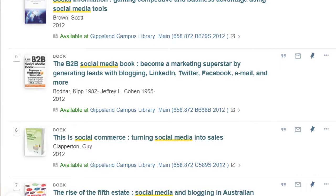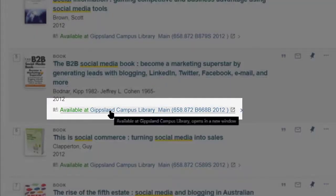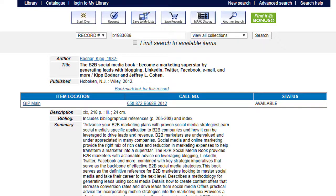To request an item with quick search, click on the available link. A new window will open with a full description of the item. Click on the request icon and follow the prompts.